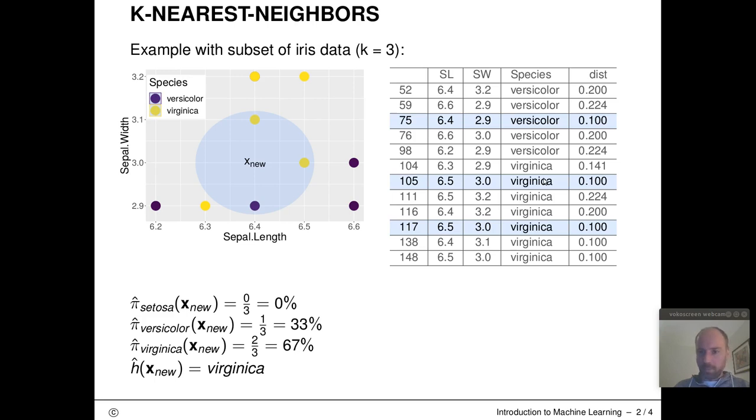And we have also computed the distances of all training data observations to this guy x new here. And conveniently, we have also marked the three training data observations with minimal distance to x new, which is this guy, this guy, and this guy, which all have a distance of 0.1 to x new. And as you can now see, there is zero occurrences of class setosa in these three nearest neighbors.